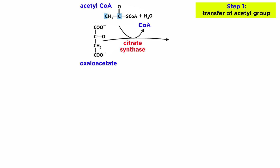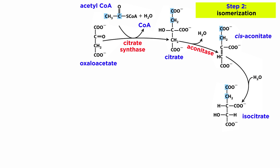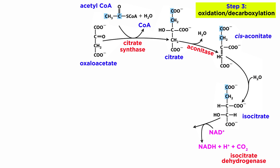In the first step, the enzyme citrate synthase removes the acetyl group and tacks it onto oxaloacetate to form citrate. Next, with help from aconitase, a water molecule is removed and another one is added to generate a structural isomer of citrate called isocitrate. Then, catalyzed by isocitrate dehydrogenase, isocitrate is oxidized by NAD+, and then decarboxylates to form alpha-ketoglutarate.